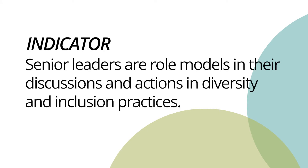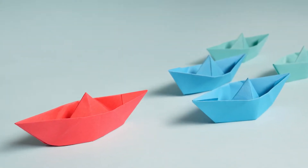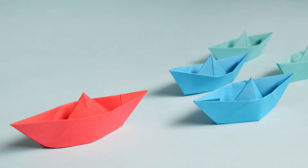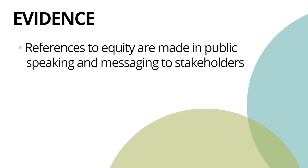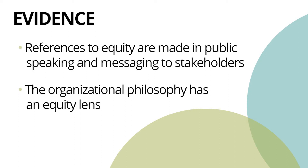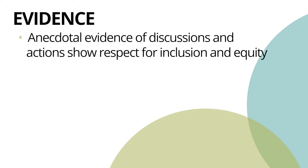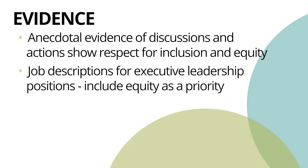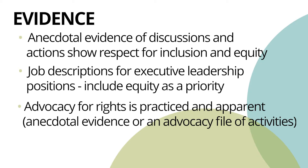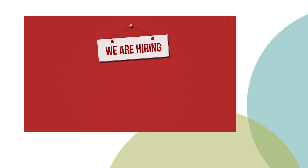Indicator: Senior leaders are role models in their discussions and actions in diversity and inclusion practices. Leaders consciously create the conditions for equity and inclusion instead of only responding to issues or perceived problems. Evidence includes: references to equity in public speaking and messaging to stakeholders; an organizational philosophy with an equity lens; strategic plan documents indicating actions for inclusionary practices; anecdotal evidence of discussions showing respect for inclusion; job descriptions for executive leadership that include equity as a priority; and advocacy for rights with an anecdotal evidence or advocacy file of activities.